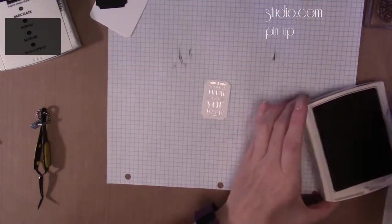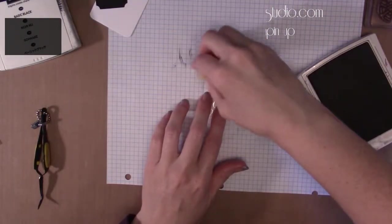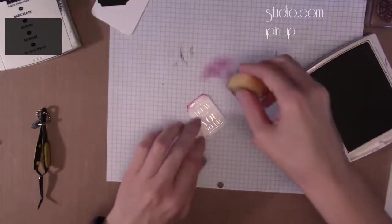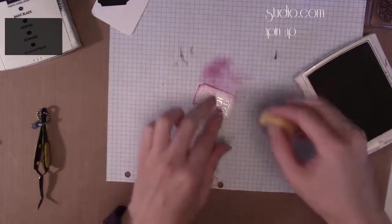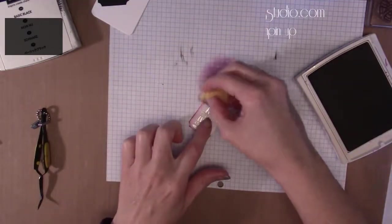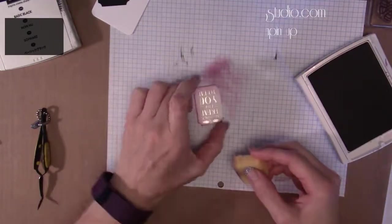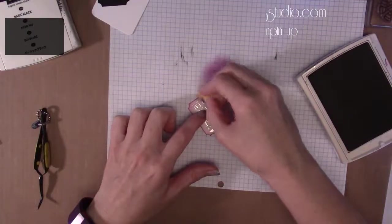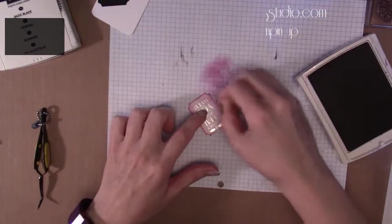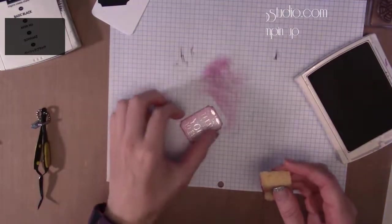You just ink it up and kind of come in off from the side. Don't start it off on whatever you're inking, kind of come in at an angle and that makes it so that it's nice and soft.